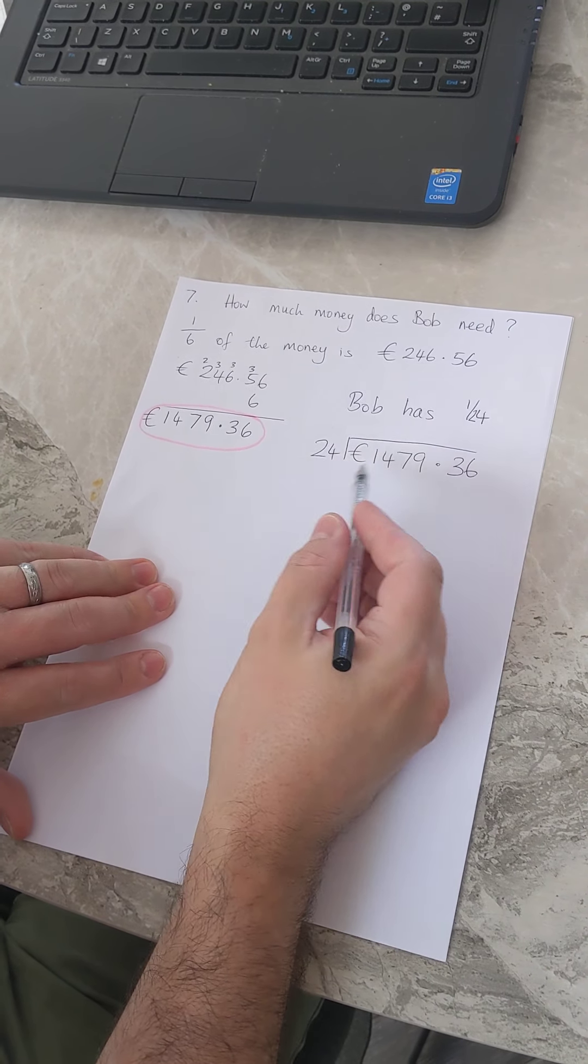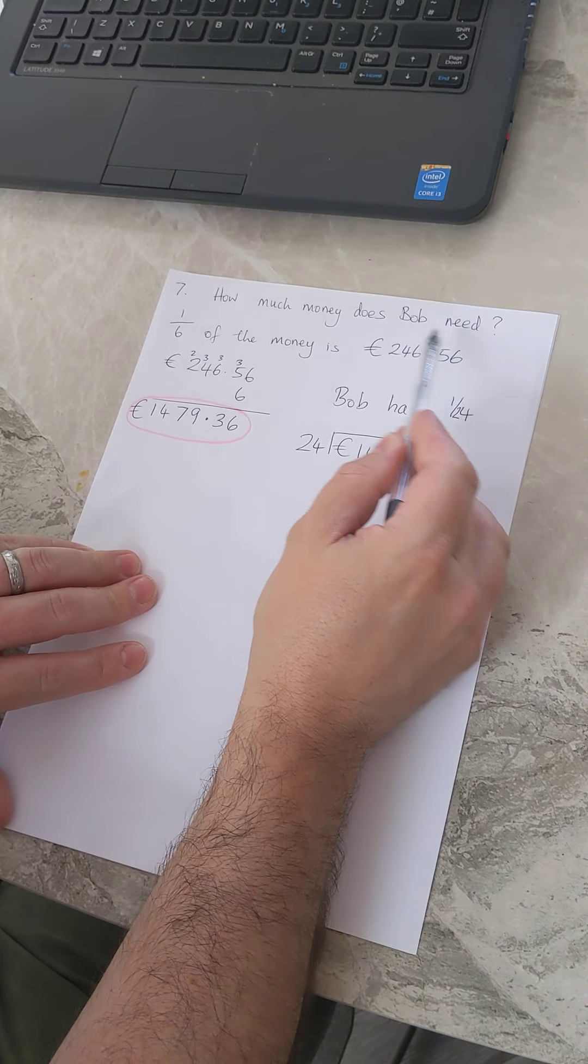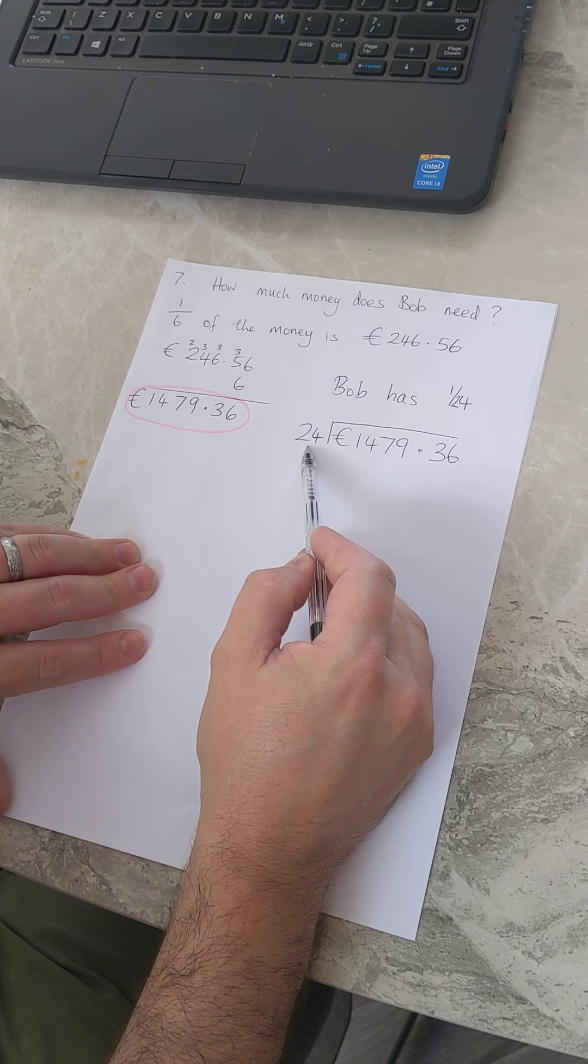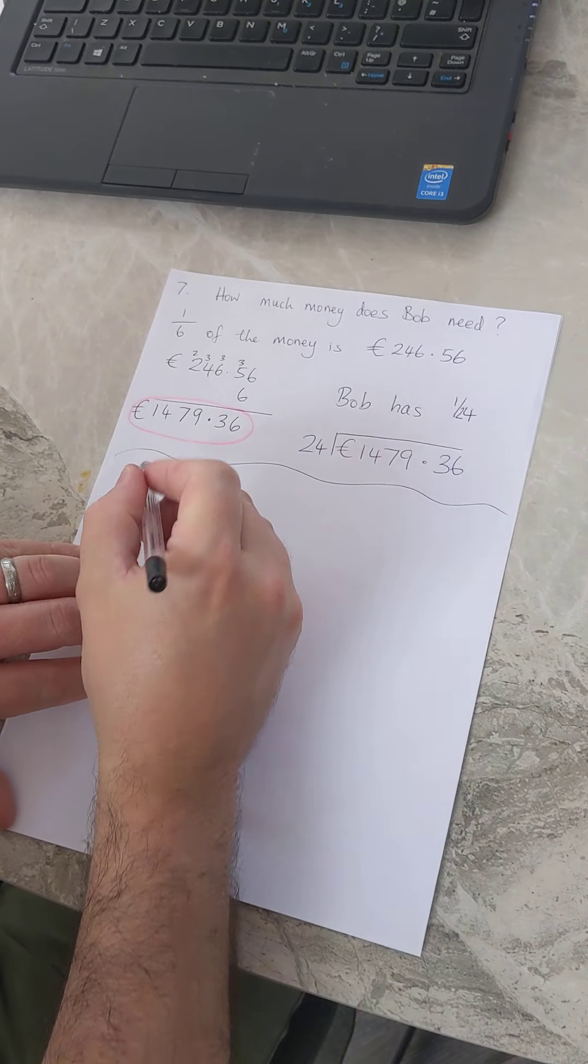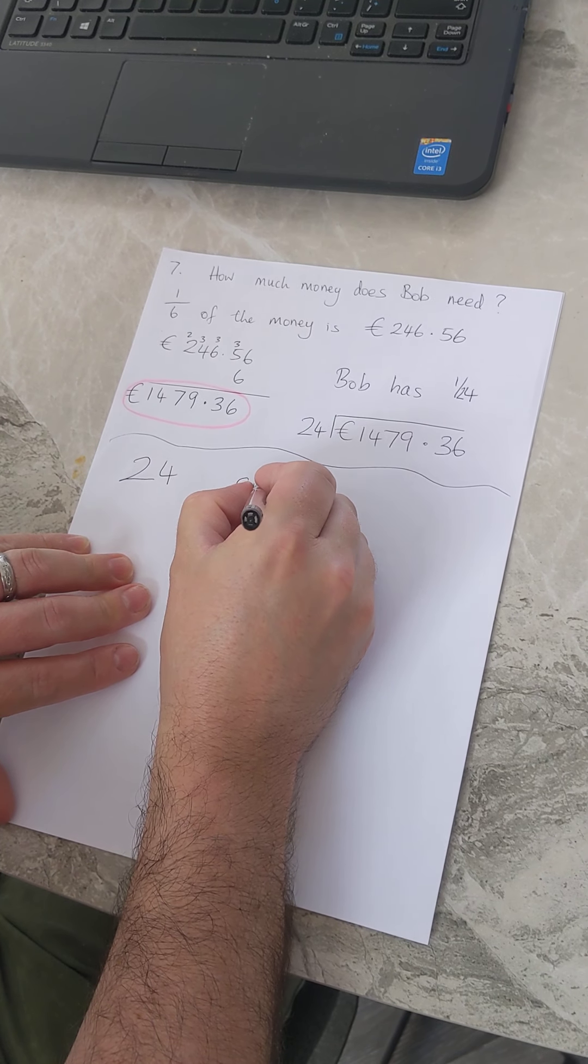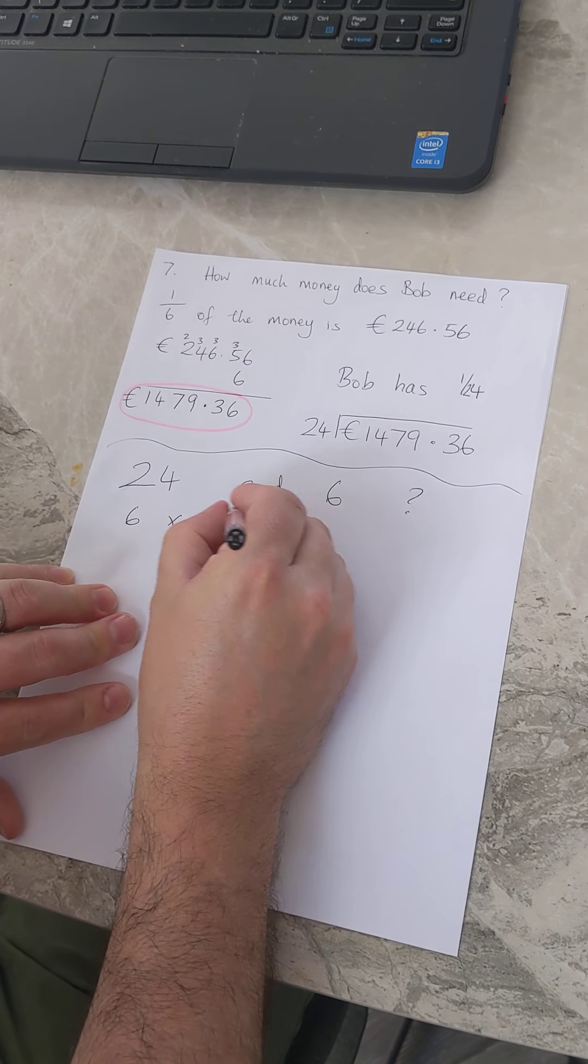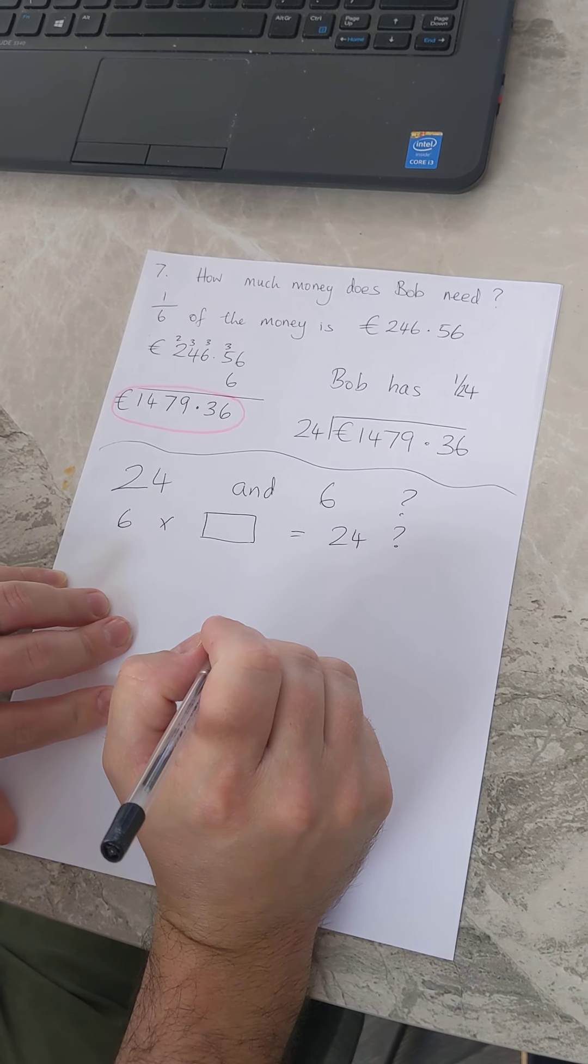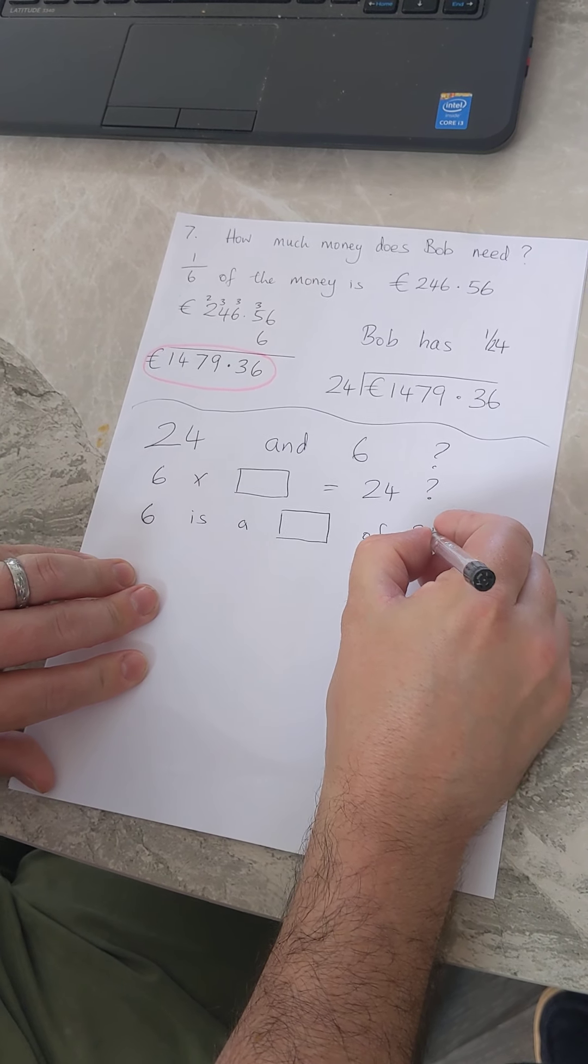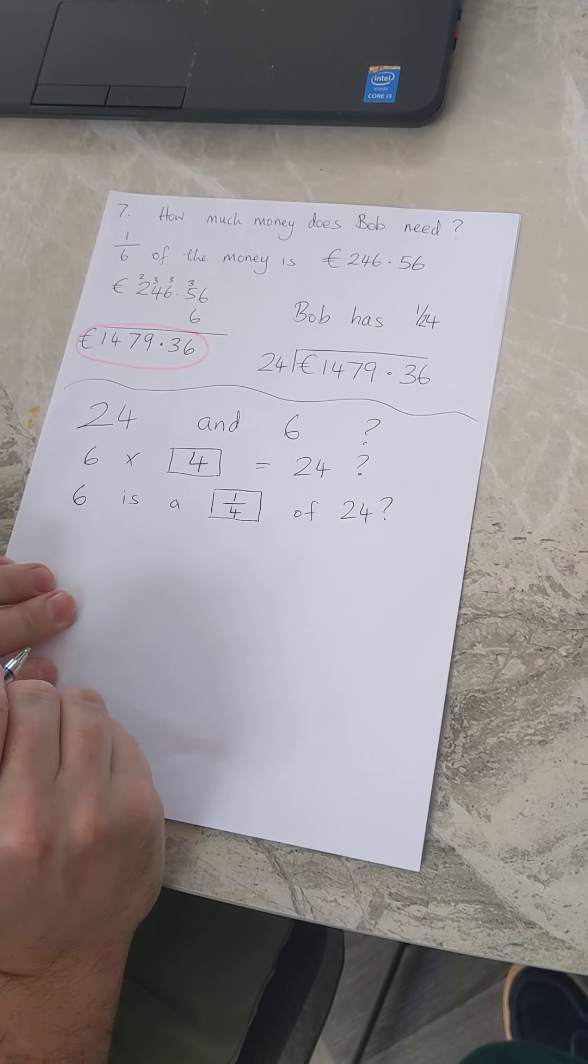So what could I do instead? Well I know that a sixth is this. Can I use knowing that a sixth is this to find out what a 24th is? Is there a relationship between 24 and six? Well I know that six times what is 24?